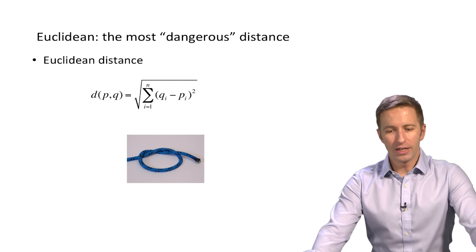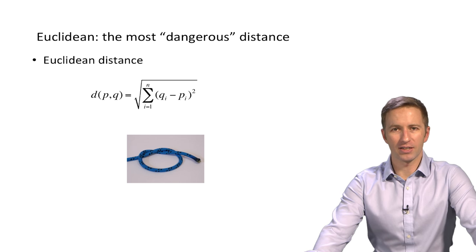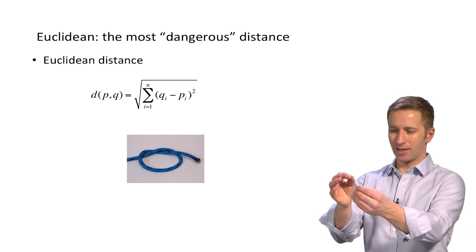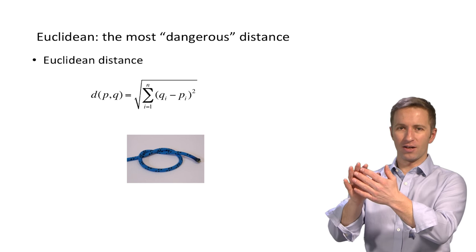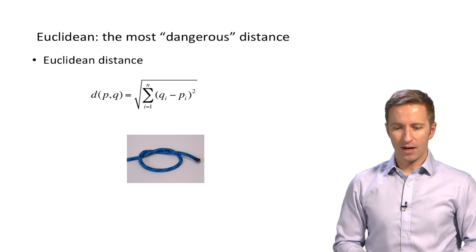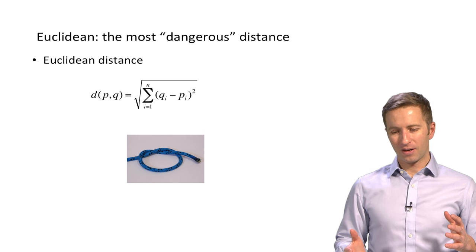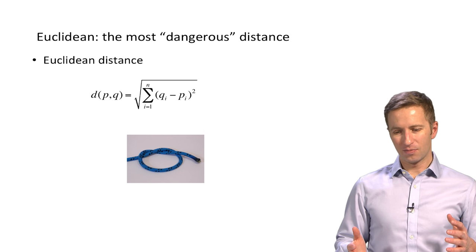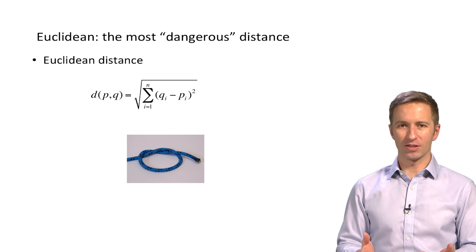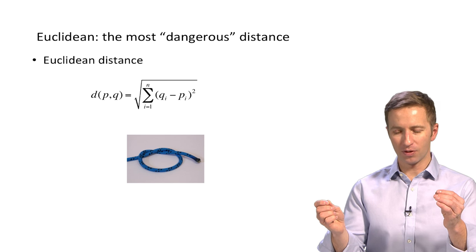Now, we're going to start with Euclidean distance. This is the most common distance metric, not in microbiome analysis, but just in general. That's just like the actual distance in space between two points. And I think of it as the most dangerous distance. The problem is, it's simple, everyone knows it,